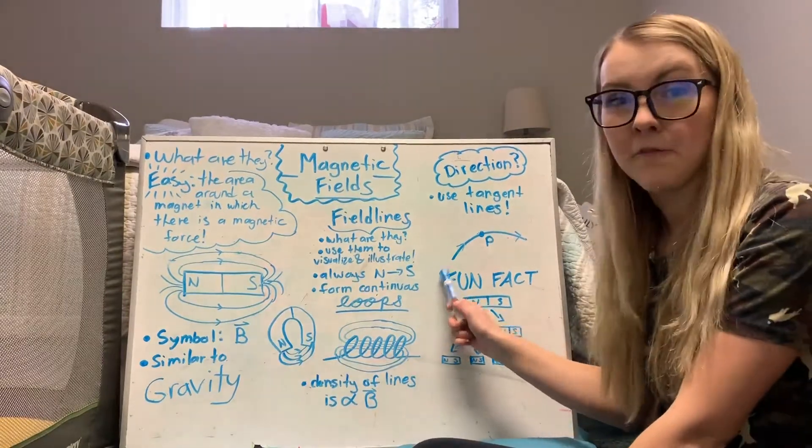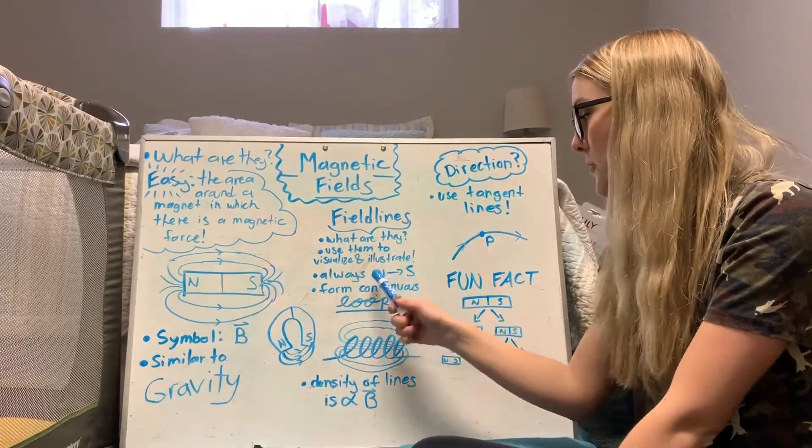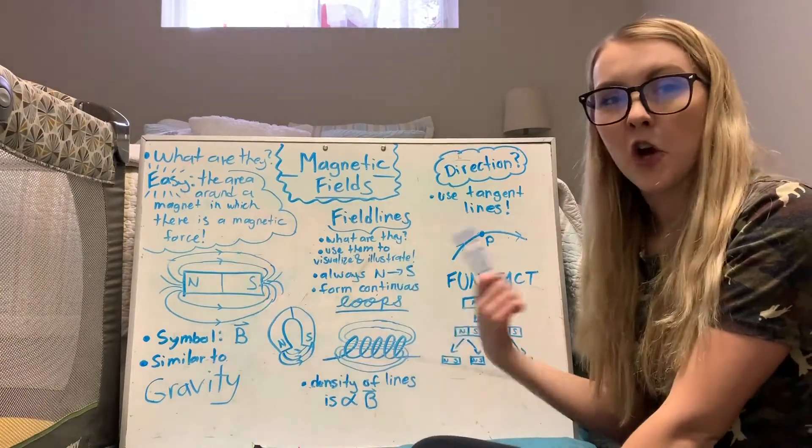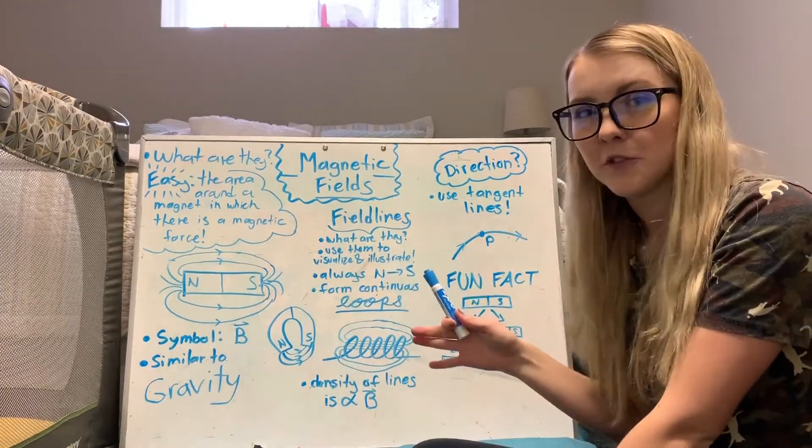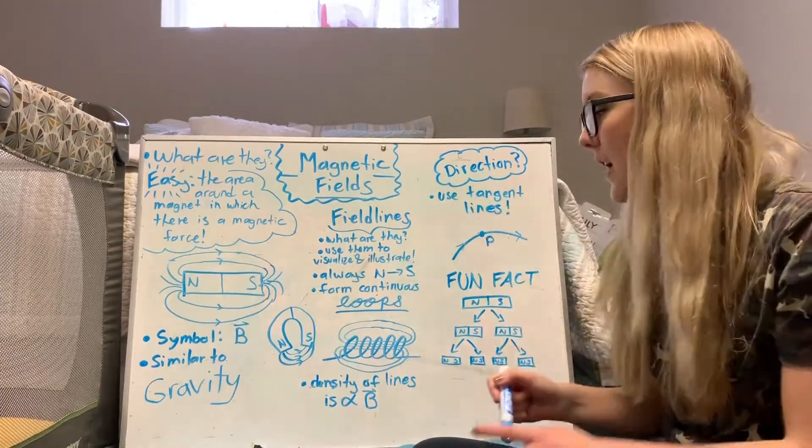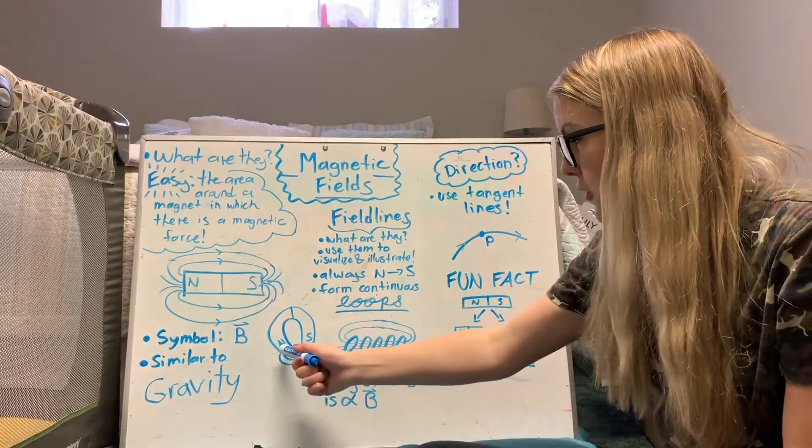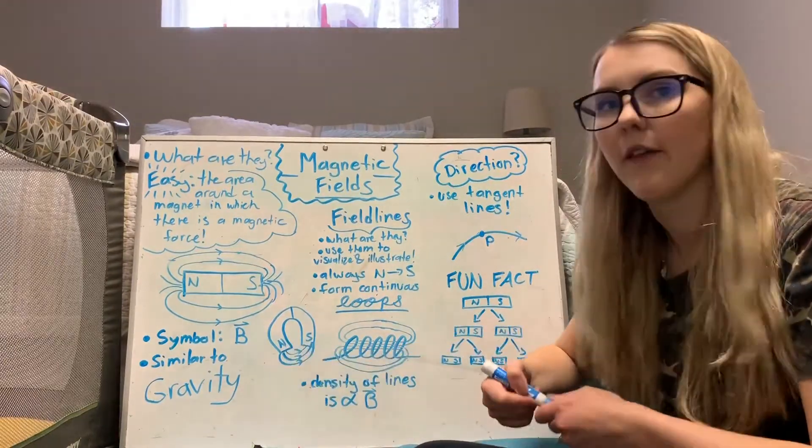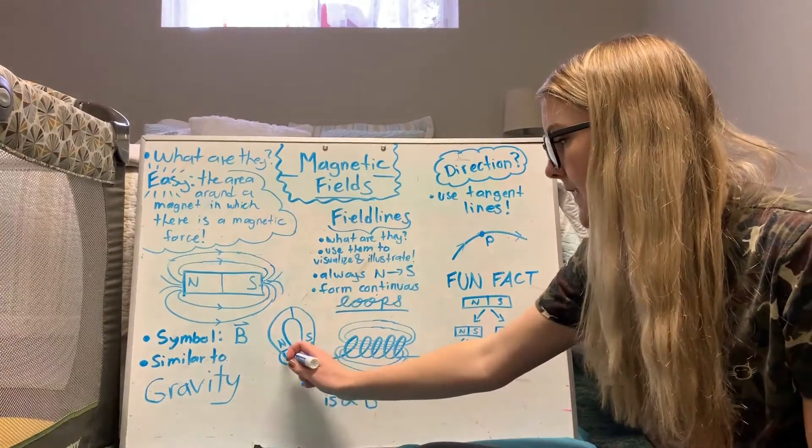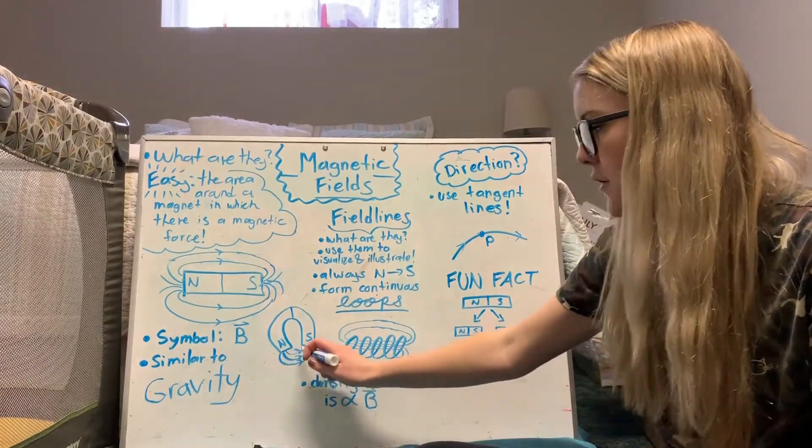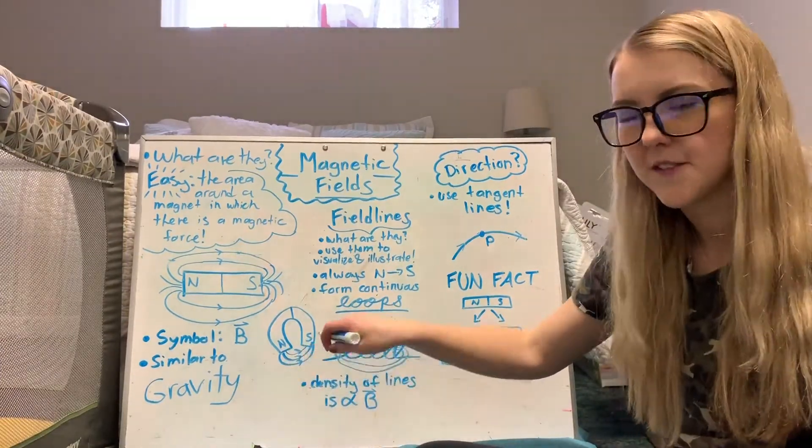And one very important thing for field lines is that they always flow from north to south. So when you're drawing them it's a very easy rule, you can just remember that they always go from north to south. So this little horseshoe magnet down here, if you want to draw them just like I've done here, you would just draw those lines north to south just like that and then you can add those little arrows to show which way it's going.